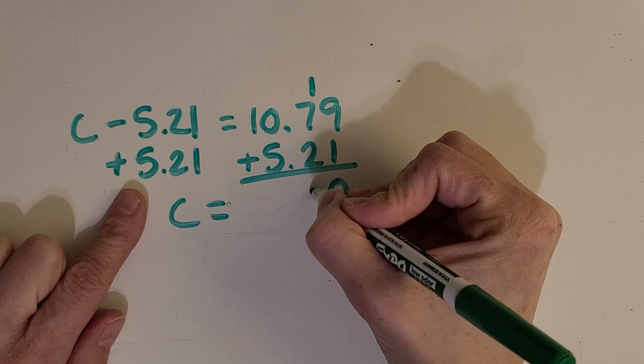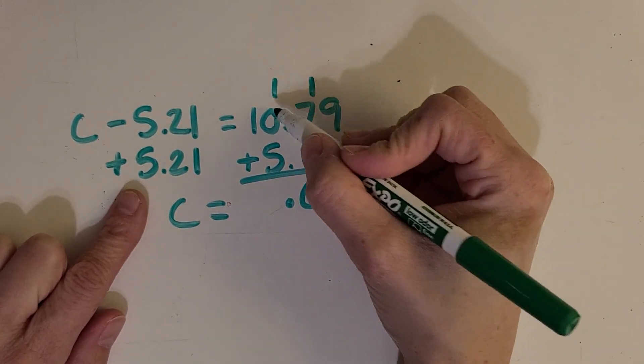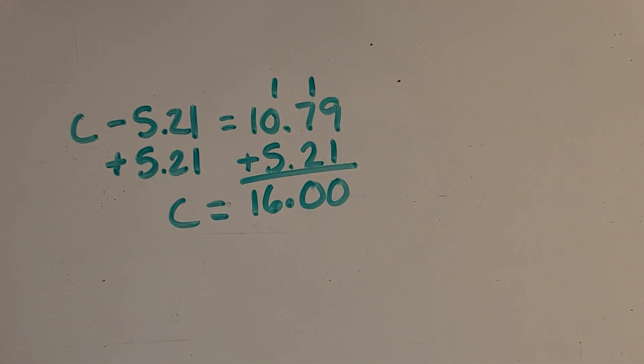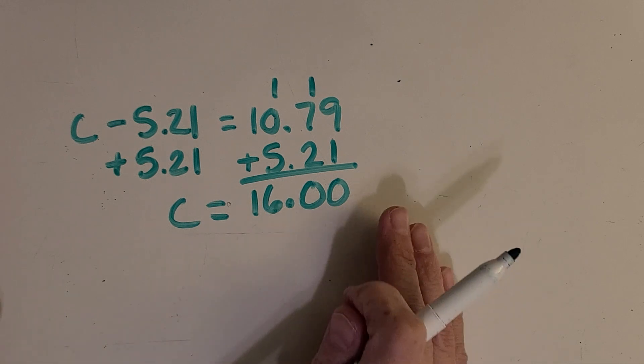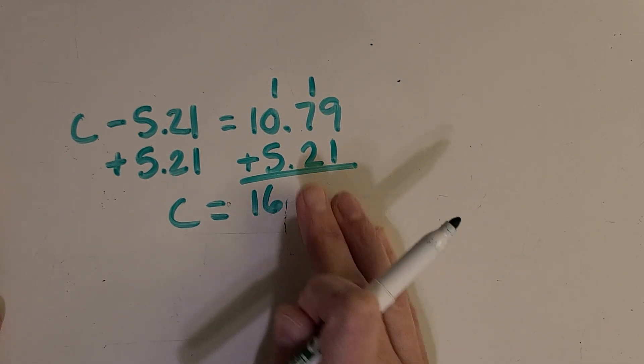9, 10. Bring the decimal straight down. 6, and 1. So, it looks like it's just 16, and we don't really need this 0.00, so c equals 16.